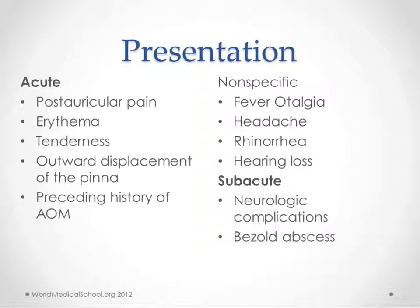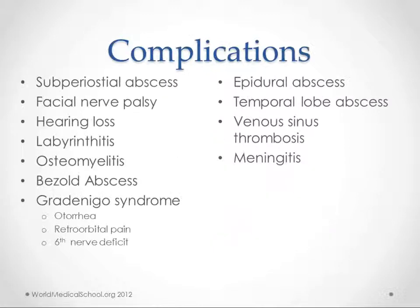There are also some nonspecific changes like fever, headache, and rhinorrhea. Hearing loss can occur in both the acute and chronic settings — acutely because there's an obstruction with purulent material, or chronically because there's been some scarring of the area. The subacute process is when you have a slower spreading infection that may not cause these acute symptoms, so we don't pick them up as soon. Those are the ones more likely to cause neurological complications and Bezold's abscess.